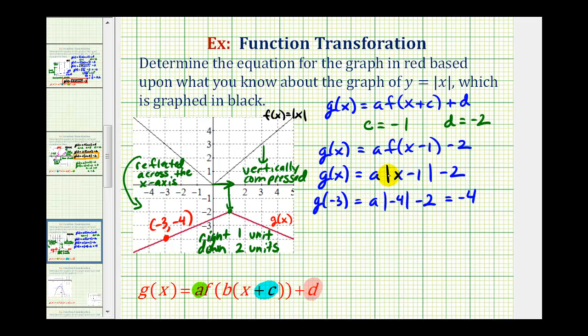Now we'll solve for a. This will be four a minus two equals negative four. We'll add two to both sides. That gives us four a equals negative two. Divide both sides by four. And we have a equals negative one-half.